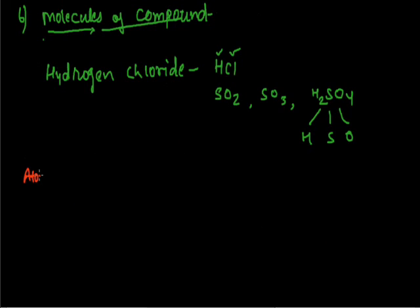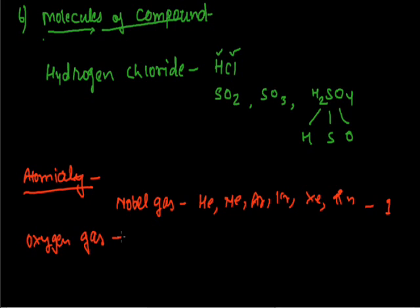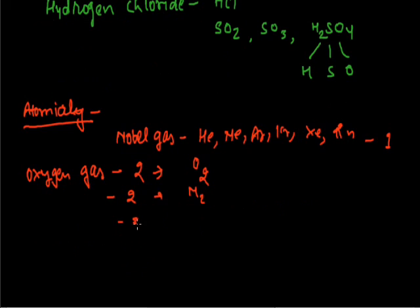What is atomicity? The number of atoms present in one molecule of an element or compound is called atomicity. Noble gases — helium, neon, argon, krypton, xenon, and radon — have atomicity 1, as they exist in atomic form. Oxygen gas (O₂) has atomicity 2; nitrogen gas (N₂) also has atomicity 2. Ozone (O₃) has atomicity 3. Phosphorus (P₄) has atomicity 4, and sulfur (S₈) has atomicity 8.